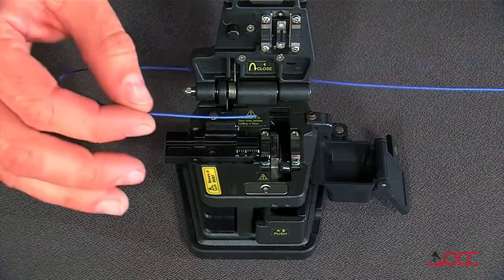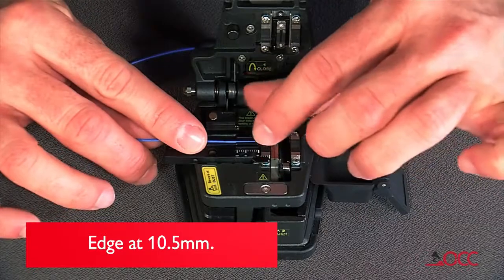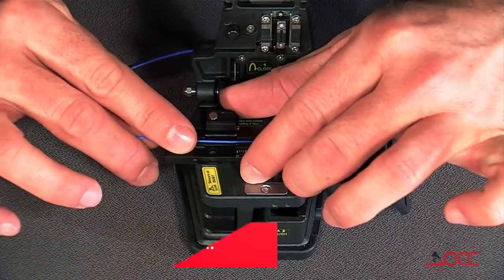Set the stripped fiber into the cleaver, such that the 900 micron buffered fiber's edge is at the 10.5 millimeter position, and cleave it.